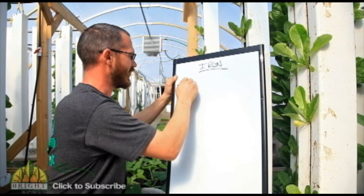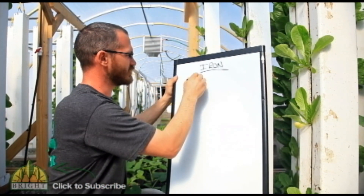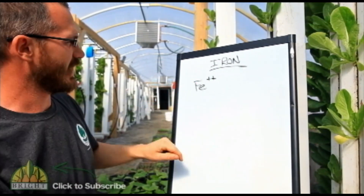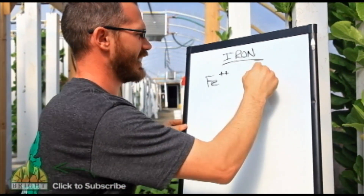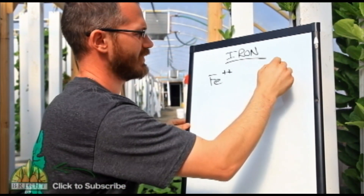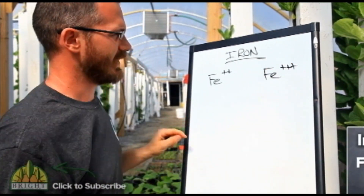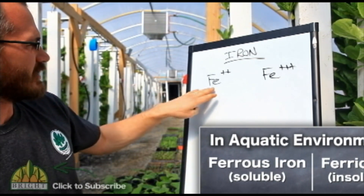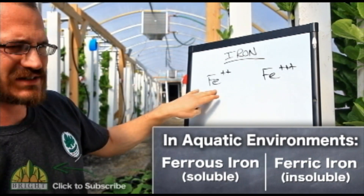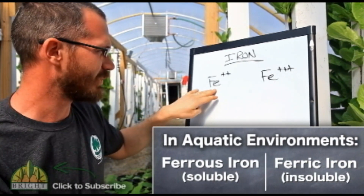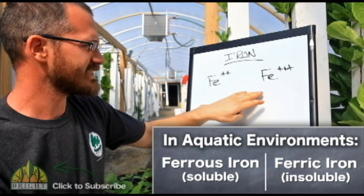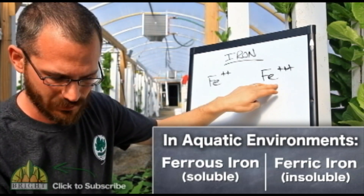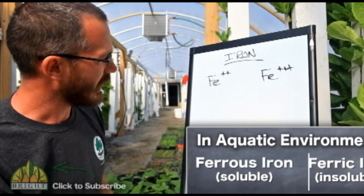We have iron with two positive charges — that's ferrous iron, and this is soluble. And we have iron with three positive charges — that's ferric iron, and this is not soluble.